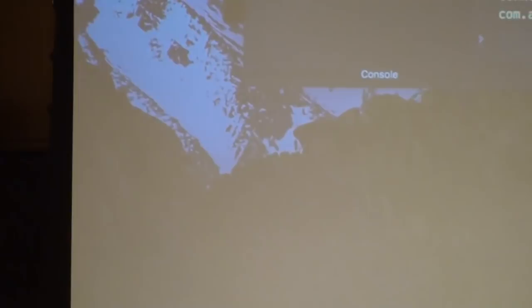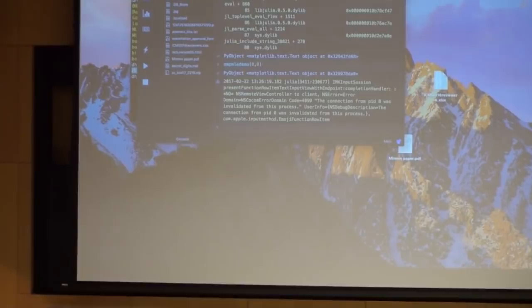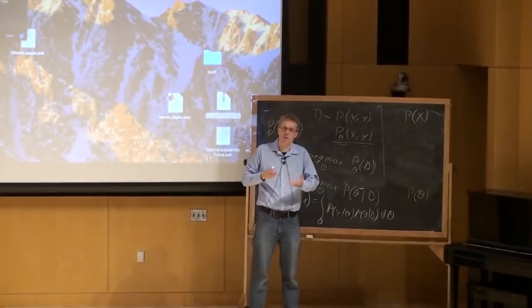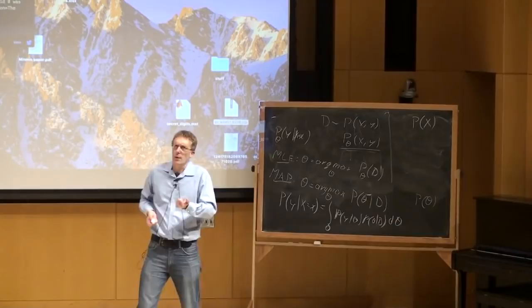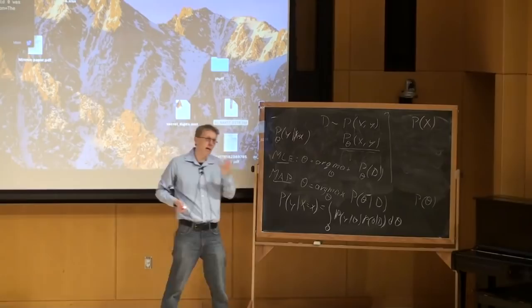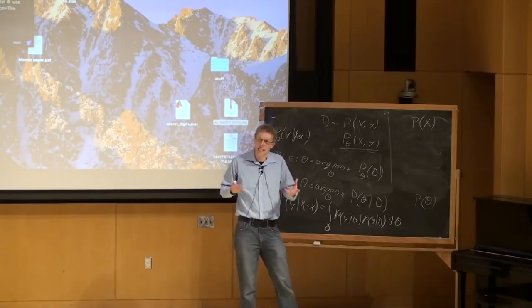We looked at the simplest possible case — just P(x), without any y. This was a coin toss. You find some old ancient coin, you don't know if it's exactly biased, and you want to know what's the probability this particular coin gives you heads. You sample some data — you toss it ten times, three times you get heads and seven times you get tails, and now you'd like to estimate the probability of heads.